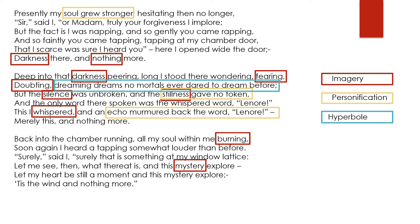The second new figurative language device for today is hyperbole — simply an over-exaggeration. When thinking about what on earth could be happening, the narrator says he begins to 'dream dreams that no mortal ever dared to dream before.' This exaggeration emphasizes that the things he is thinking are very deep and out of this world, and again puts us ill at ease.